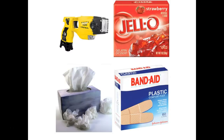So when you look at these items, what do you think of? Stun guns are considered tasers and tasers are considered stun guns. Jello is just a branded type of gelatin. Kleenex is considered a branded type of tissue. Band-Aids are just a branded form of adhesive bandages. This is what we call a genericized trademark — trademarks that represent common names we tend to associate with certain items.